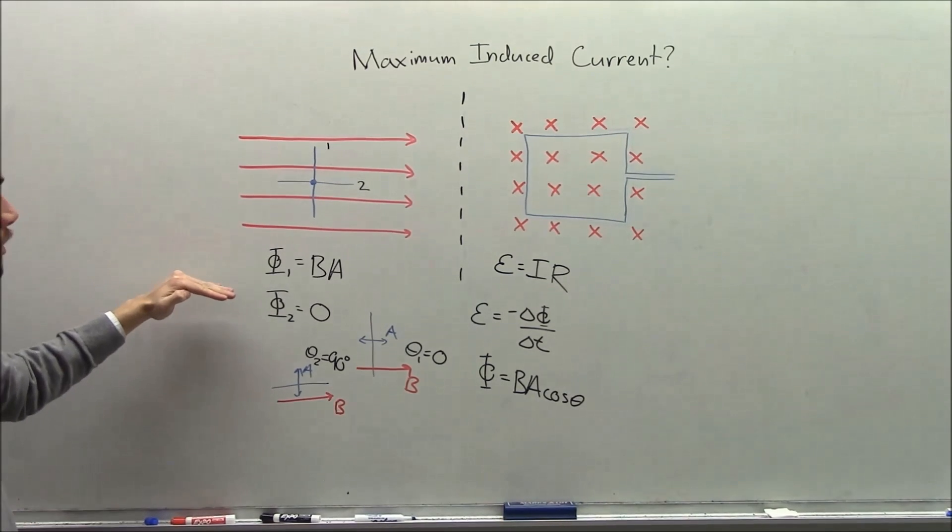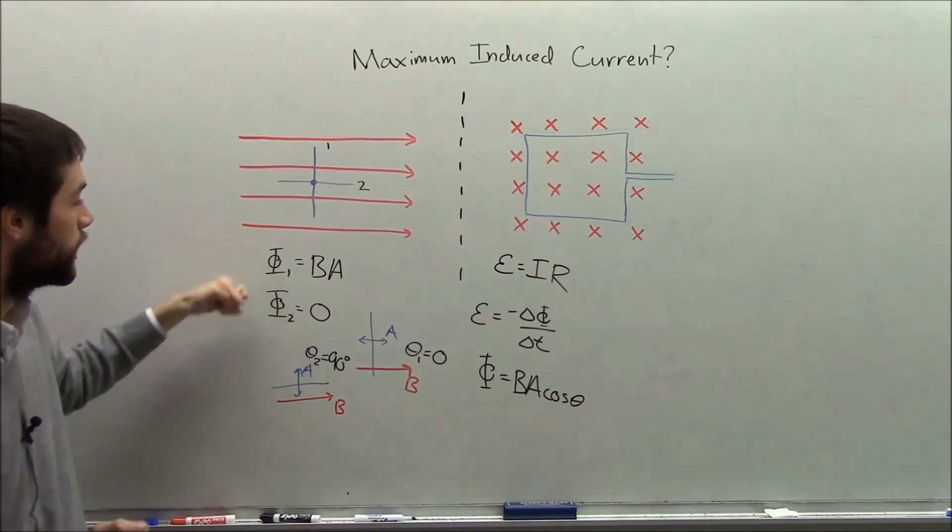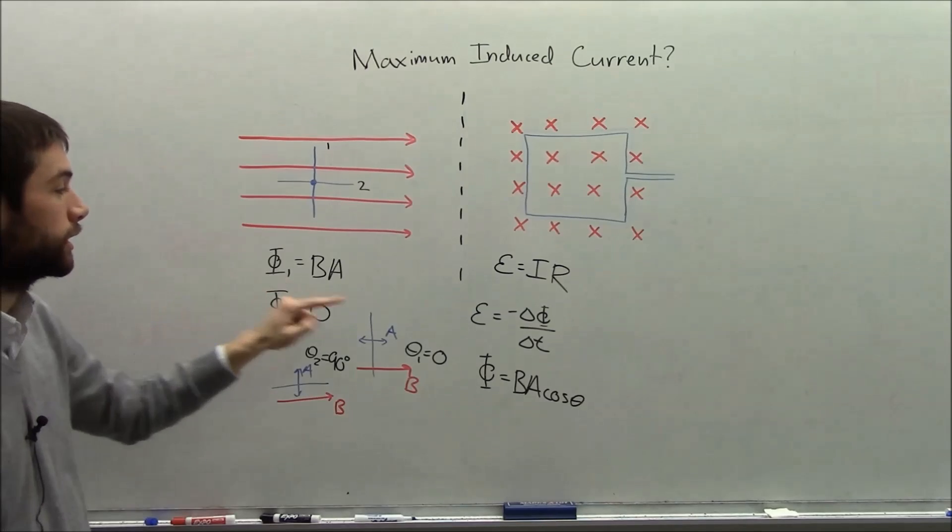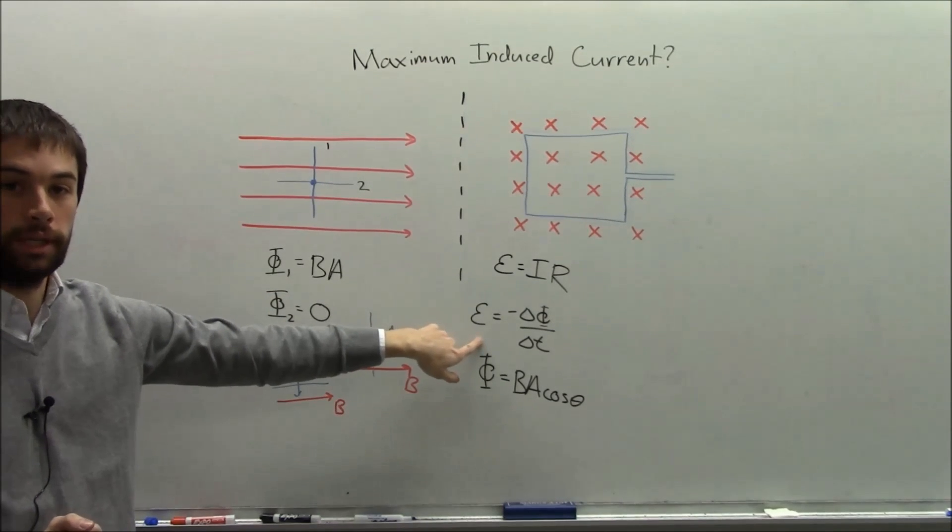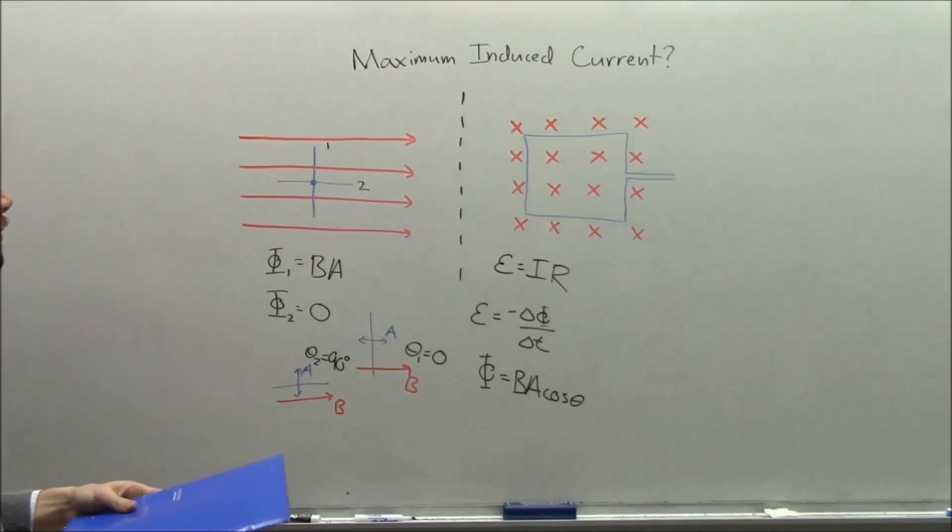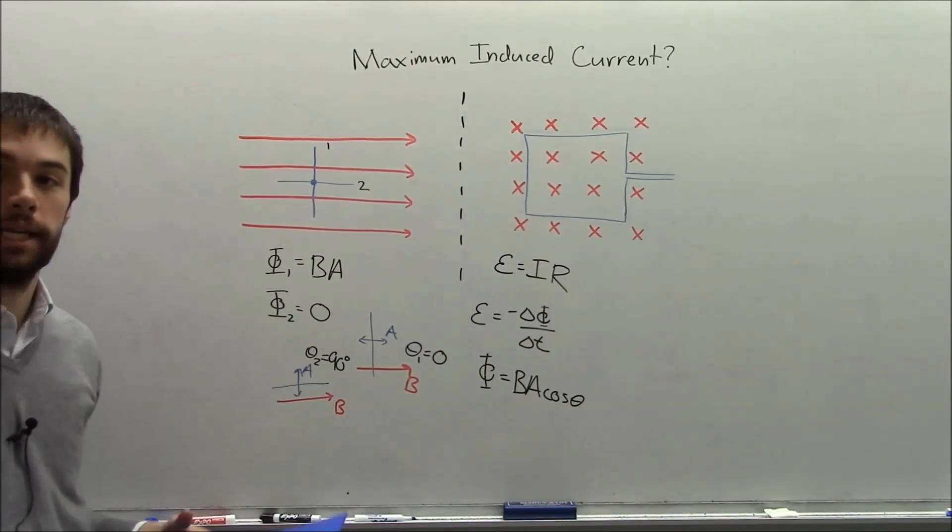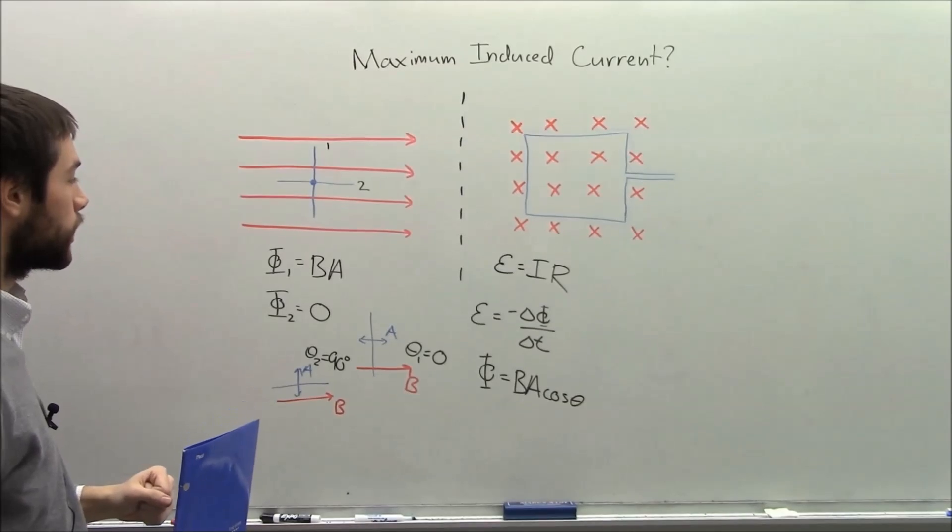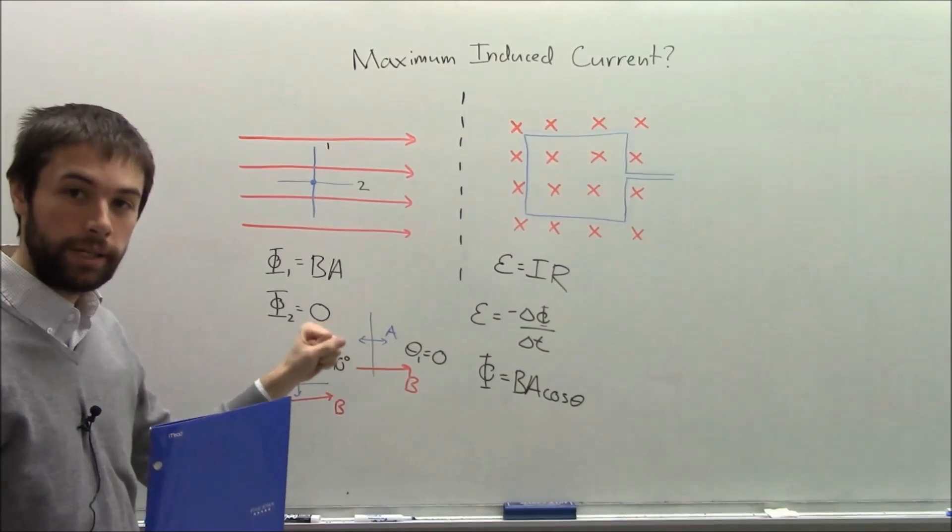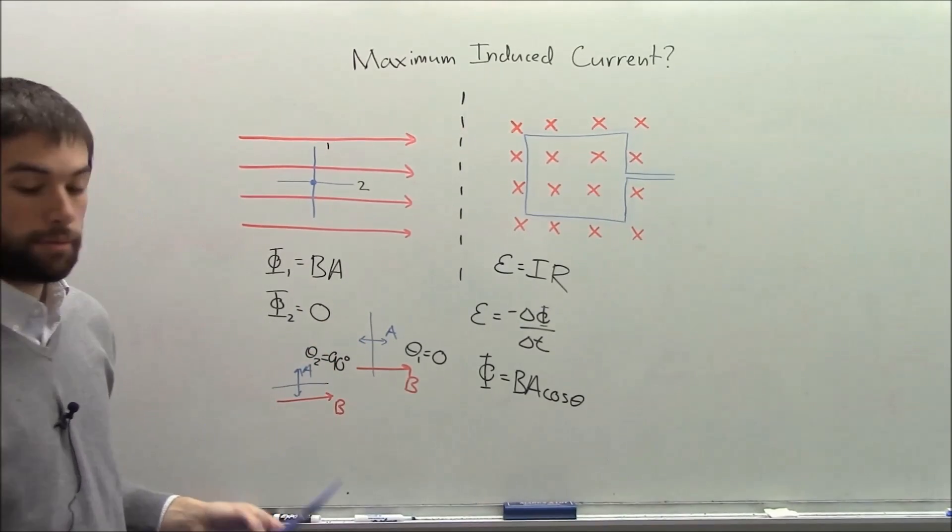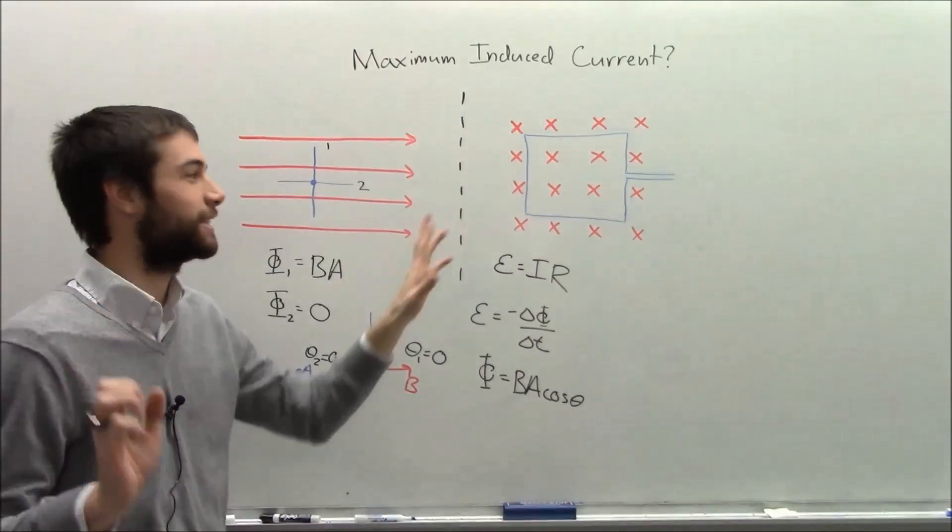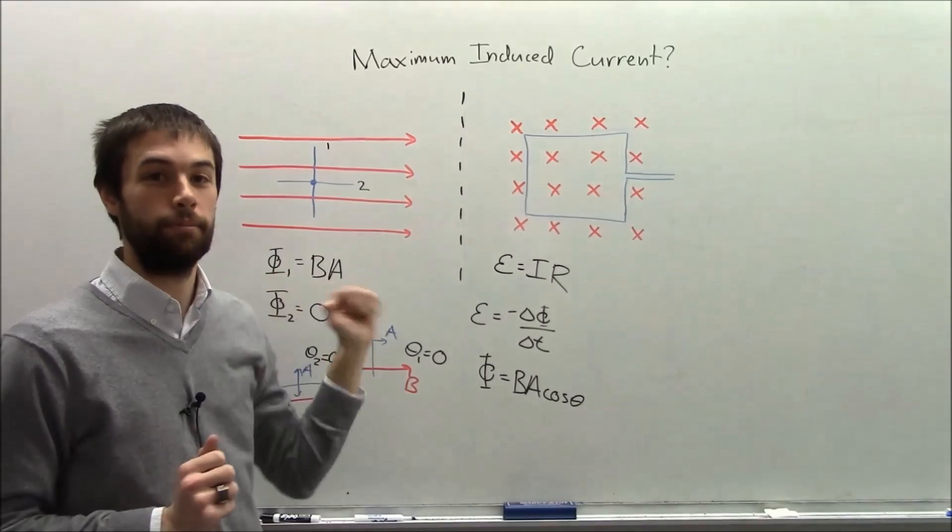So we need to figure out in which one of these two cases is the flux changing the most. And here's where you can do it like we did in class—I think in class we did it in a very mathematical way—but here's where you can think about conceptually what flux is. Remember that flux, heuristically, is the amount of X's that poke through my loop.